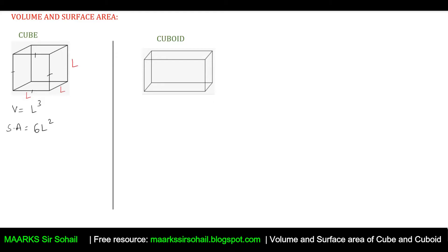What if we have an open cube? An open cube is one that is open from the top — for example, a box we want to wrap with paper. To find the area of the paper needed, we find the surface area without the top. The formula for the surface area of an open cube is 5l², because one top face is missing.